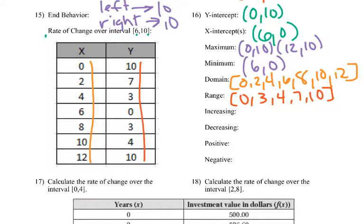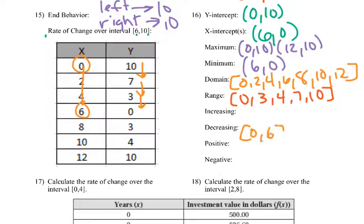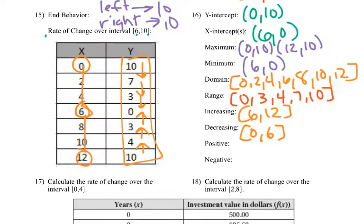For increasing and decreasing — 10 to 7 is decreasing, 7 to 3 decreasing, 3 to 0 decreasing. So from 0 to 6 we're decreasing. Then we're increasing the rest of the way — from 6 to 12 we're increasing. They're all positive, so from 0 to 12 we're positive, and so never negative — we do that empty set.